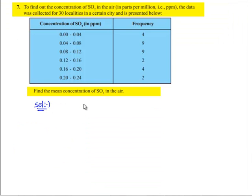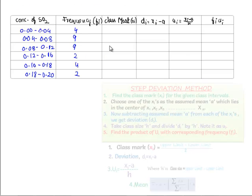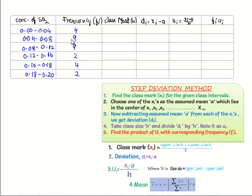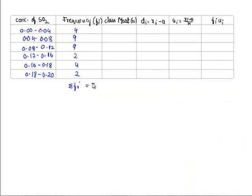They have asked us to find mean concentration of SO2. Let's take the given data into tabular form. Here we shall solve the problem by taking step deviation method. The concentration of SO2 is written here, the frequency fi has been written, and the sum of frequency, that is Σfi, is 30. And we should find class mark xi.